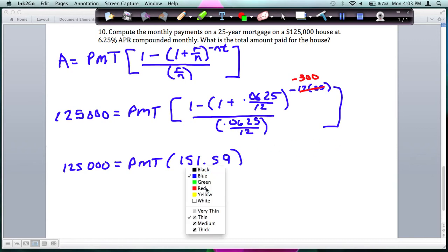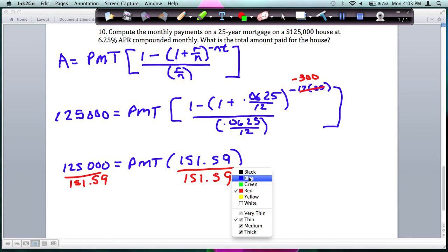Divide both sides by $151.59 to get your payment by itself to figure out what that payment needs to be. And you get a payment of, make sure you put your dollar sign, $824.59.